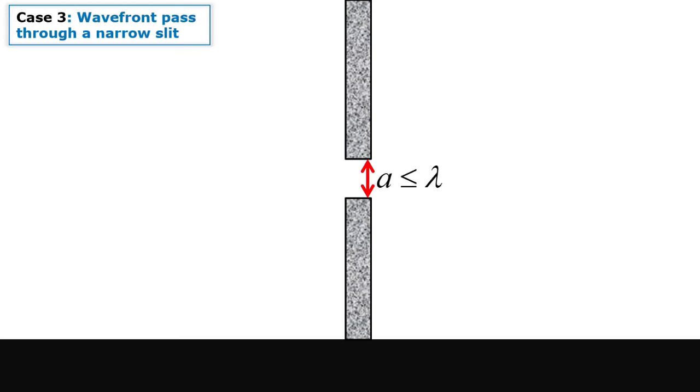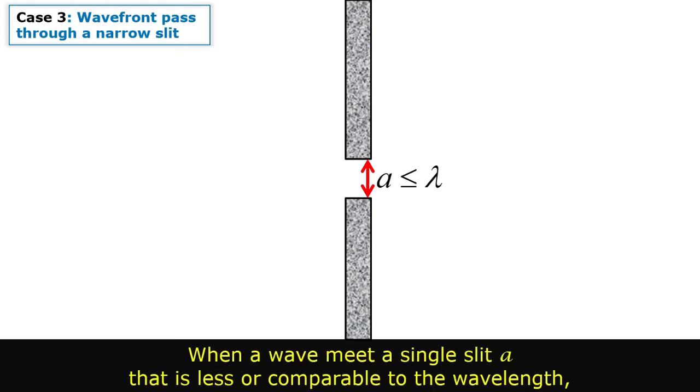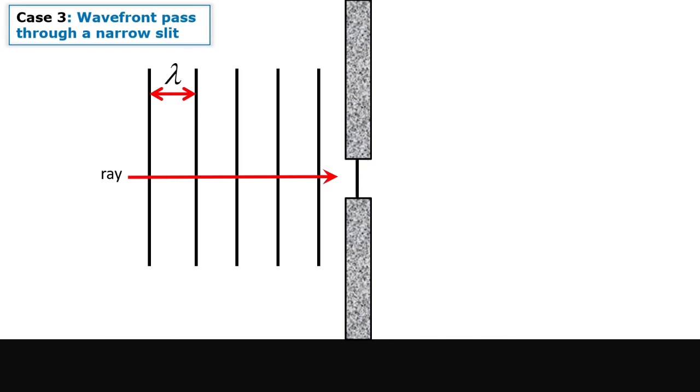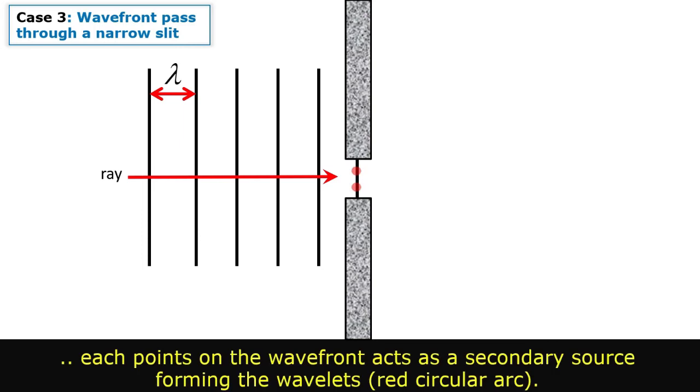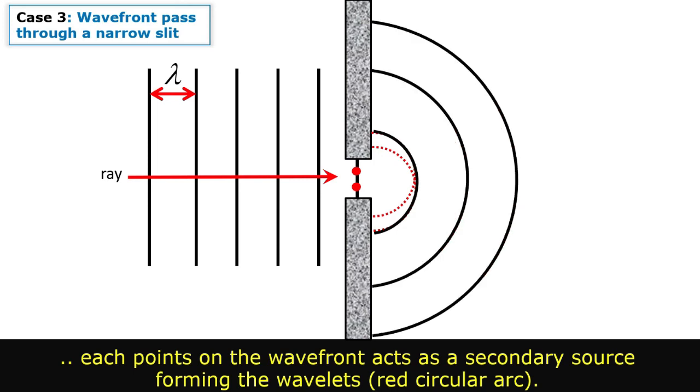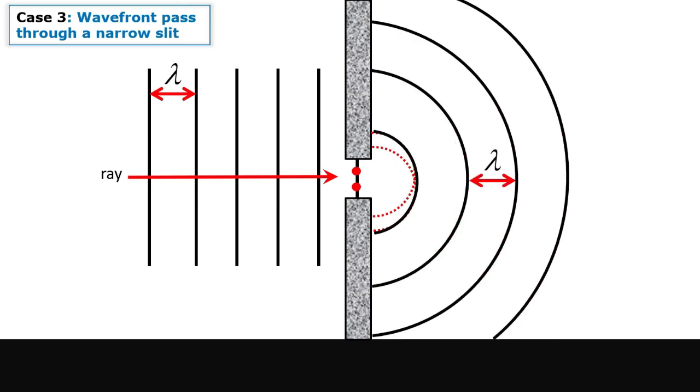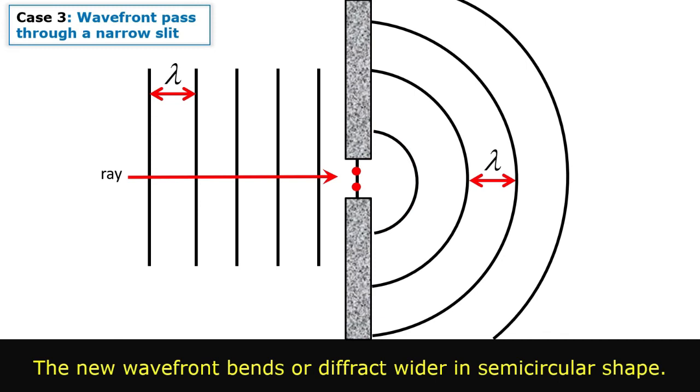Case 3: When a wave meets a single slit A that is less or comparable to the wavelength, each point on the wavefront acts as a secondary source forming the wavelets. The new wavefront bends or diffracts wider in semi-circular shape.